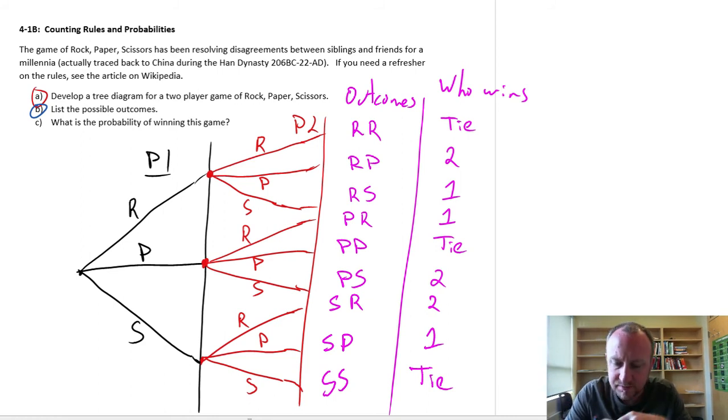So here we have all of our possible outcomes of the game. So this would be our answer here for part B.